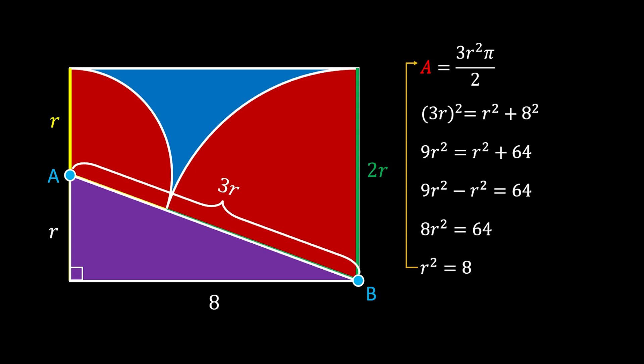Now we can plug this value back into the formula for the red area and we will get that that is 3 times 8π over 2. We can of course simplify this and get that that is 12π. And this is the value for our red area.